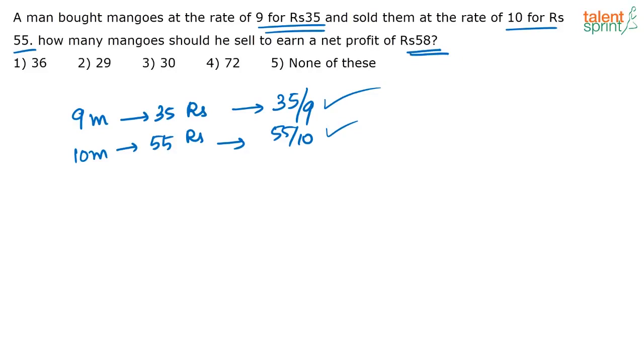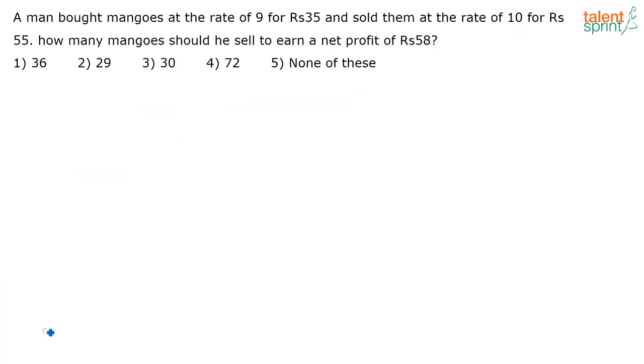But that is the way all of us would approach it. When we directly see this question that is the first thing that goes to our mind. But whenever such question comes, see what we have to remember here is that here he bought 9 mangoes, here he is selling 10 mangoes and there are lot of fractions involved. So let us try to reduce this fraction and try to solve this question in a slightly different way. Let us try to take the values a bit differently so that we are able to arrive at the answer faster.